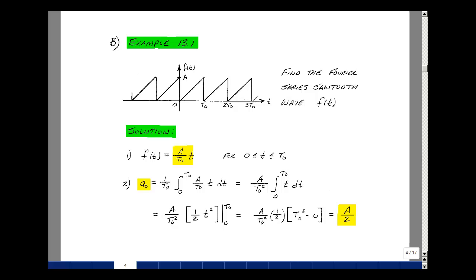This lesson deals with finding the Fourier series of a sawtooth waveform. You can find these notes in the ECE 202 ebook in Chapter 13, starting on page 4.